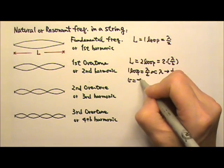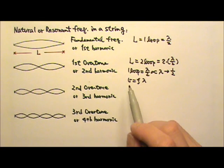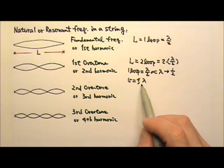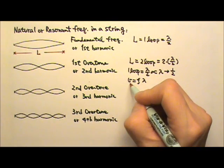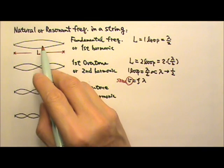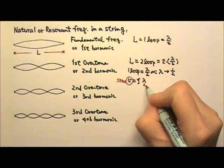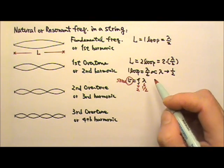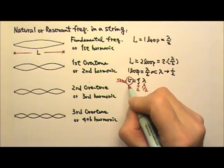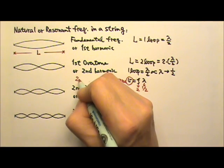Because the speed equals frequency times lambda, we can compare these three numbers for the first harmonic and the second harmonic. The speed is the one that is the same, because it's the same medium — the same string under the same tension. That means if the second harmonic's wavelength is halved, the frequency must be doubled, because two times one-half equals one. So if wavelength is halved, the frequency must be doubled in order to keep the speed the same. That means the frequency for the second harmonic must be twice the fundamental frequency.